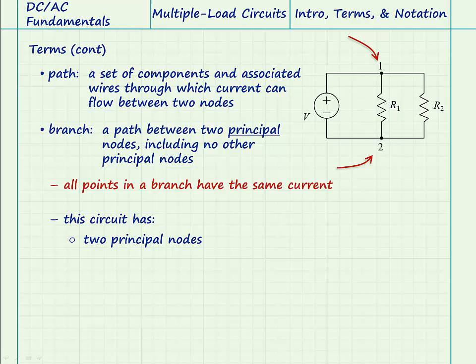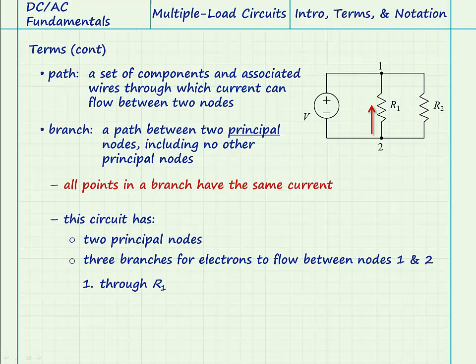This circuit has two principal nodes labeled 1 and 2. There are three branches for a current to move between principal nodes 1 and 2. Electrons arriving at node 2 may travel to node 1 through R1 which would make one branch. A second branch would be through R2.